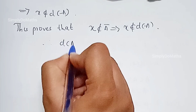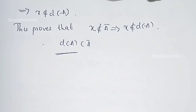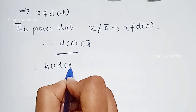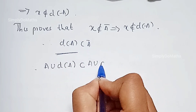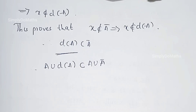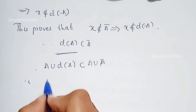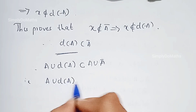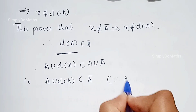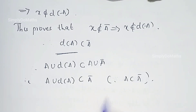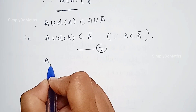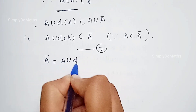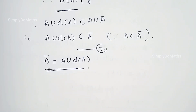This proves that X does not belong to A bar implies X does not belong to derived set of A. Therefore, derived set of A is a subset of A bar, which implies A union derived set of A is a subset of A union A bar, which is A bar itself, because A is a subset of A bar. Call this equation 2. From equations 1 and 2, we can write A bar is equal to A union derived set of A, which is what we needed to prove. This proves the theorem.